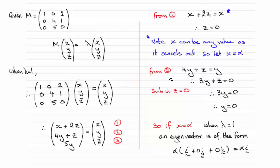Then I've turned my attention to 2, and you'll see that 4y plus z equals y. And then if we rearrange it, we get 3y plus z equals 0. We know that z already equals 0. So if you substitute that in, you end up with y equaling 0.